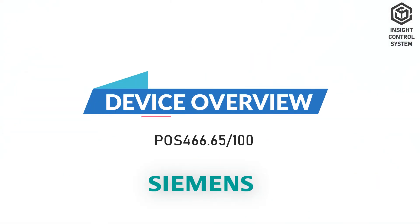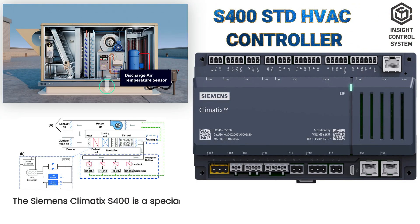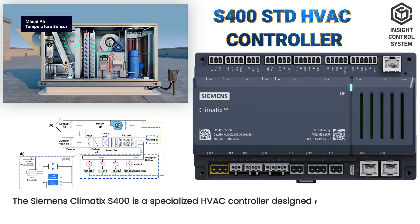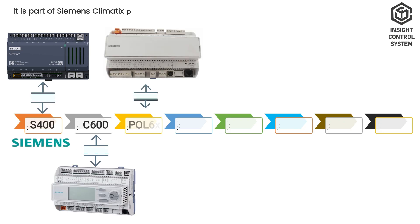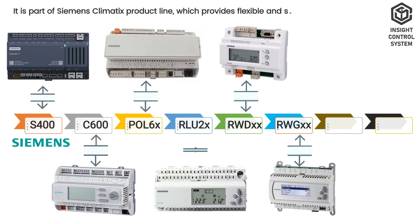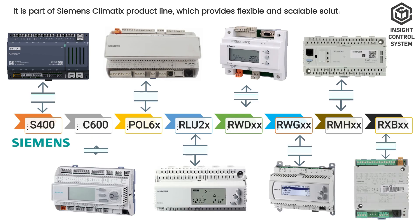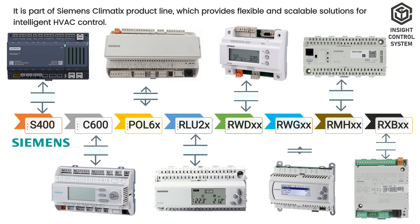Device Overview: The Siemens Klimat XS400 is a specialized HVAC controller designed for managing heating, ventilation, and air conditioning systems. It is part of the Siemens Klimat XS400 product line, which provides flexible and scalable solutions for intelligent HVAC control.